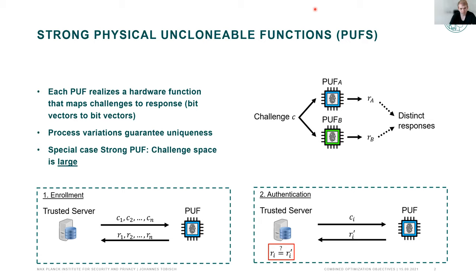So the PUF maps bit vectors to bit vectors. The trick is that the process variations that occur during manufacturing of the integrated circuit guarantee uniqueness of this mapping. So whenever you manufacture two different instances — PUF A and PUF B — they will have a unique mapping, and you can identify them by their responses.